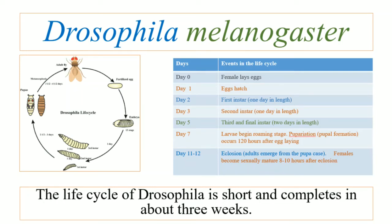The stage of first instar lasts for a day, after which the first instar is converted into second instar, which also lasts for a single day. After that, the second instar converts into the third and final instar, and this stage takes about two days. On day seven, the larvae begin the process of pupa formation.